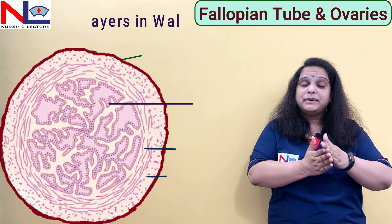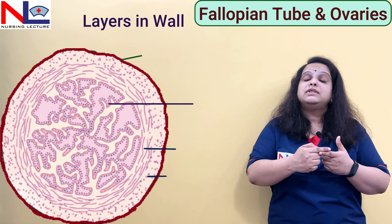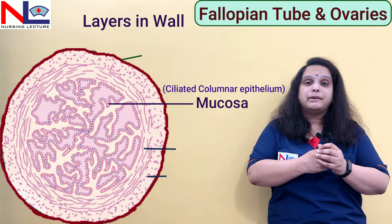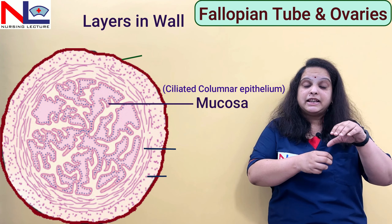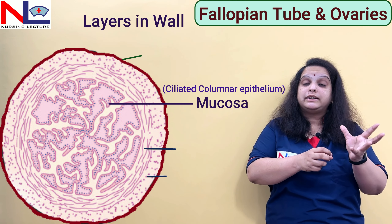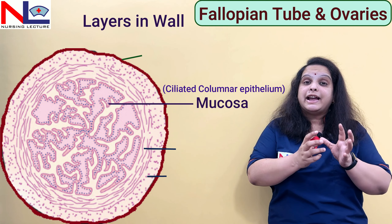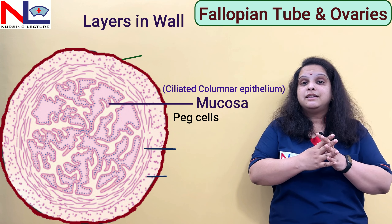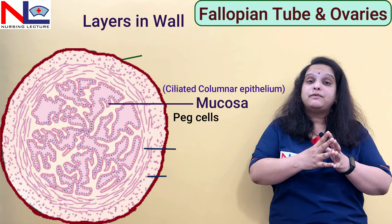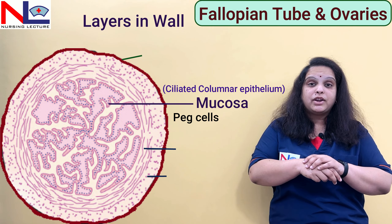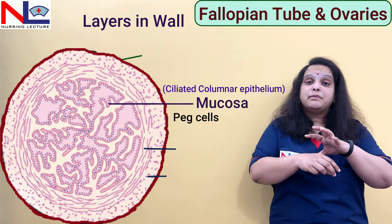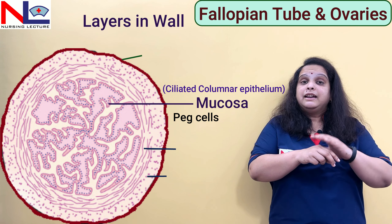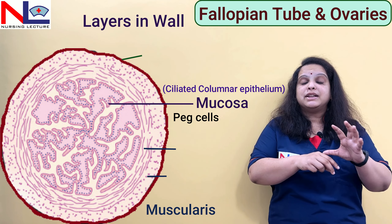If we talk about its layers from inner to outer: the innermost lining is the mucosa, which is made up of ciliated columnar epithelial lining. The cilia allow the movement of the mature gamete. The other cells within the mucosa are the peg cells, or secretory cells, which release certain substances responsible for the initial nourishment of these gametes. So the mucosa is mainly made up of ciliated columnar epithelium and also contains some secretory peg cells.